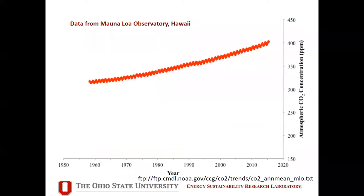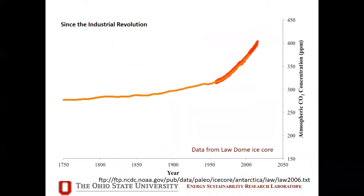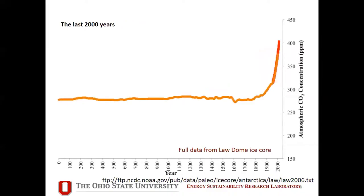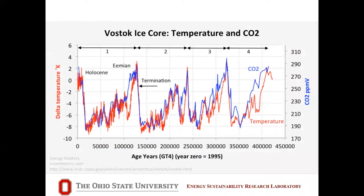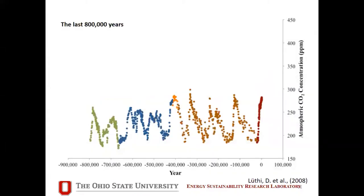As Lonnie showed, this is the Keeling curve — CO2 concentrations as recorded in Hawaii over the past 50 or so years. If we go back to basically the beginning of our country, you can see that red curve showing an uptick in the concentration of CO2 in the atmosphere. Going back all the way to year zero, the concentration of CO2 was relatively flat until we started to industrialize. There has always been natural variability in CO2 concentration, and we know that variability is correlated with temperatures.